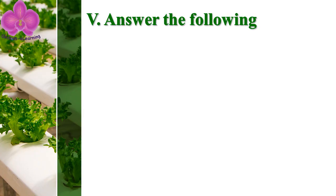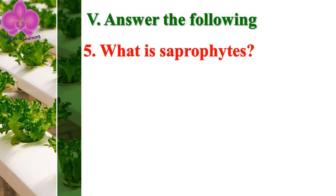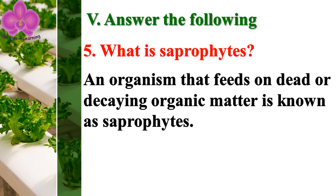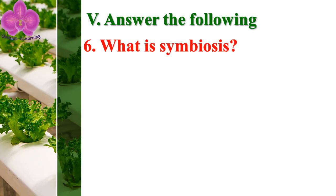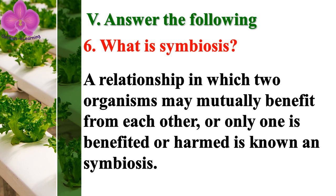Question number five: what are saprophytes? An organism that feeds on dead or decaying organic matter is known as a saprophyte. What is symbiosis? A relationship in which two organisms mutually benefit from each other, or only one is benefited or harmed, is known as symbiosis.